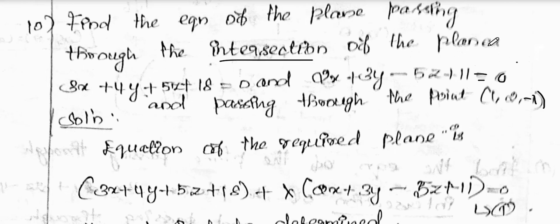Find the equation of the plane passing through the intersection of the planes: 3x + 4y + 5z + 18 = 0 and 2x + 3y - 5z + 11 = 0, and passing through the point (1, 2, -1).